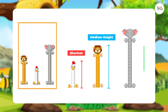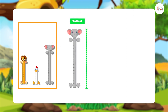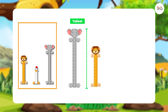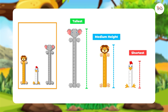This is the tallest one — put it last. We can also put these wall meters in order from tallest to shortest, like this. This is the tallest one — put it first. This one is medium height — put it second. This is the shortest one — put it last.